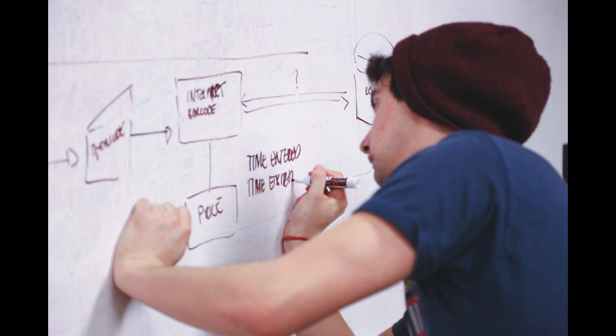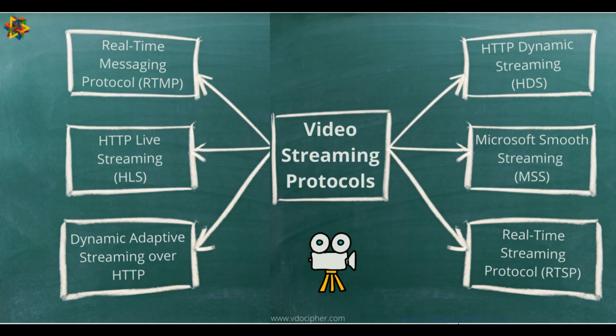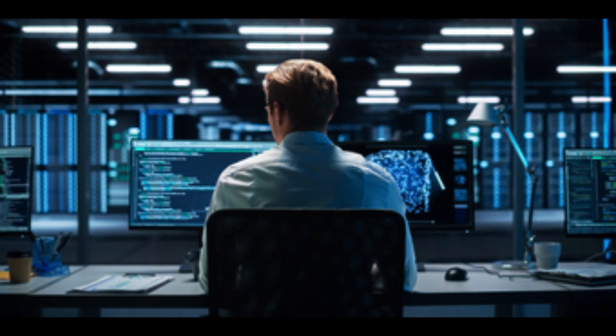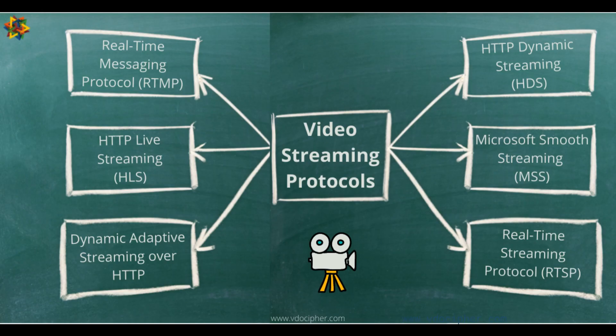RTSP. Real-Time Streaming Protocol RTSP is a network control protocol designed for streaming media. While it is not as widely used for public internet streaming, it is commonly used for streaming within local networks, such as IP cameras or surveillance systems.